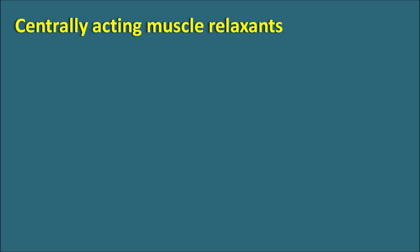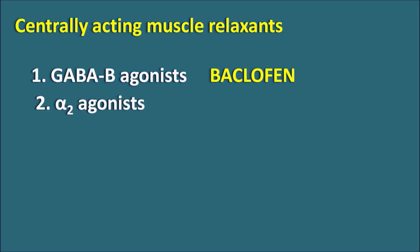What are the centrally acting muscle relaxants? We have three important ones. The first is a GABA-B agonist — one such drug is baclofen. The second is an alpha-2 agonist — one such drug is tizanidine. This drug has the suffix '-nidine', resembling clonidine. Clonidine is an alpha-2 agonist, and similarly tizanidine is also an alpha-2 agonist, used here as a skeletal muscle relaxant.